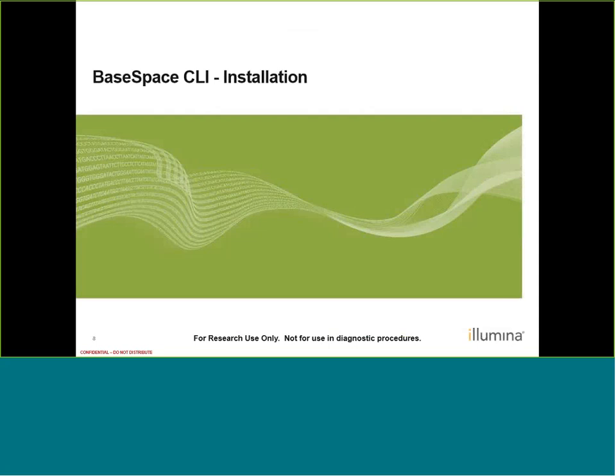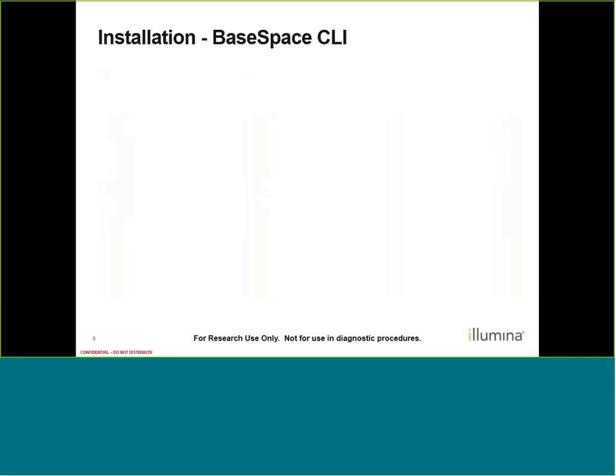Now that we know a little about both tools, let's focus on CLI. Just a reminder, if you want to follow along with the demos, the commands we'll be using are on the last few slides. Let's talk about installing CLI. Installation is pretty simple. CLI can be installed directly via the command line with packages like wget. Wget is standard for Linux, but you may have to do additional downloading and installing to get this on Mac or Windows. Another similar package is Homebrew for Mac.